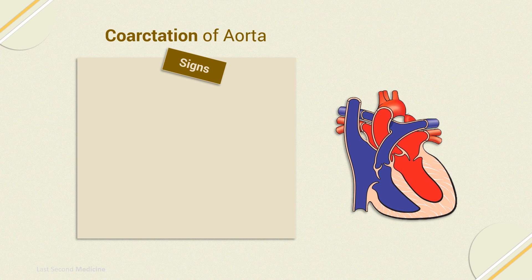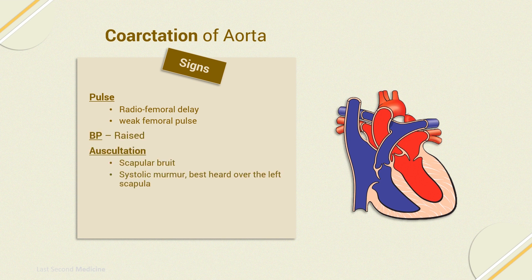Signs of aortic coarctation include radiofemoral delay, weak femoral pulse, raised blood pressure, scapular bruit, and a systolic murmur which is best heard over the left scapula, as well as cold lower extremities.